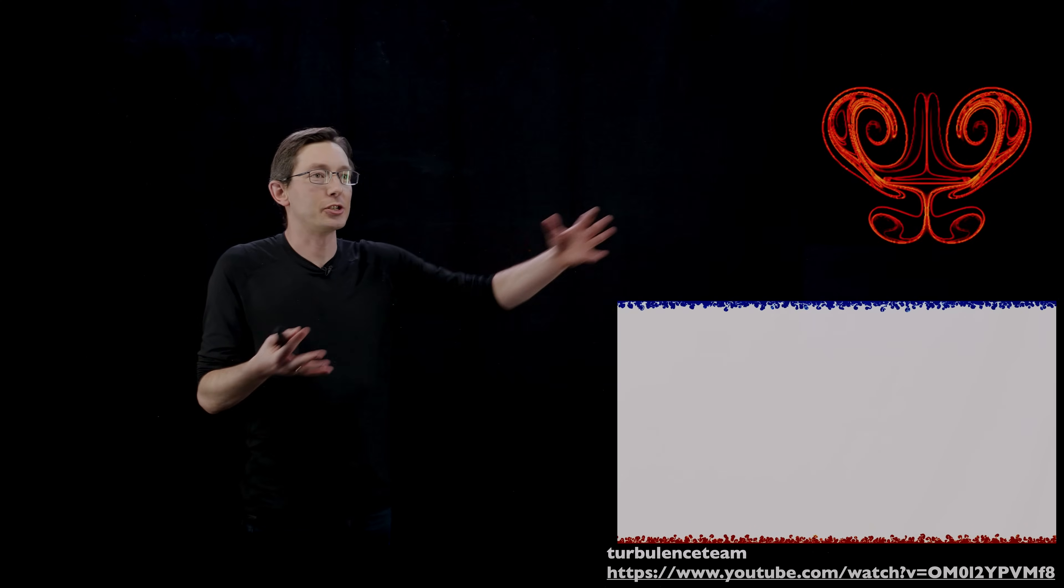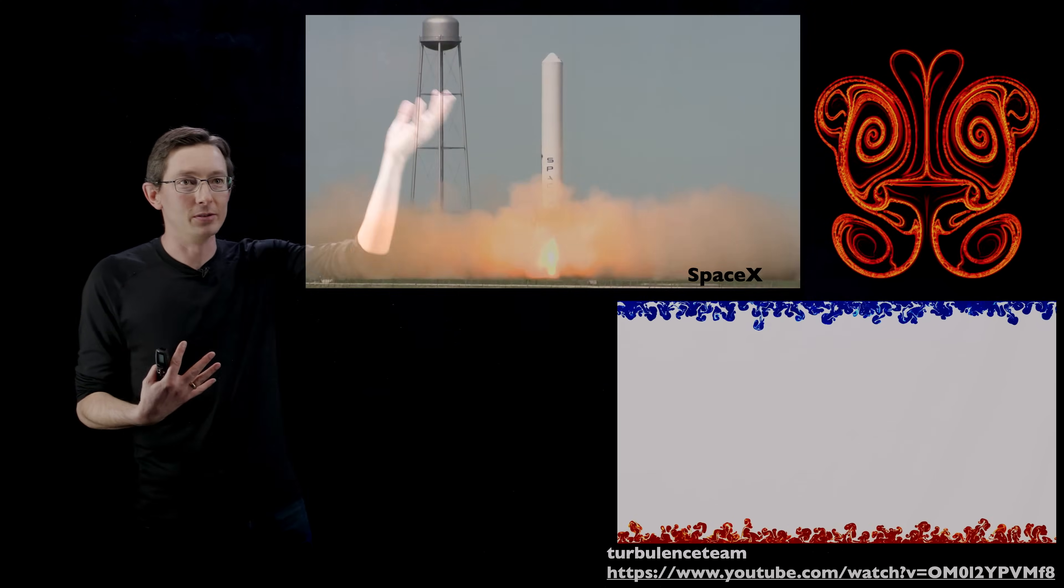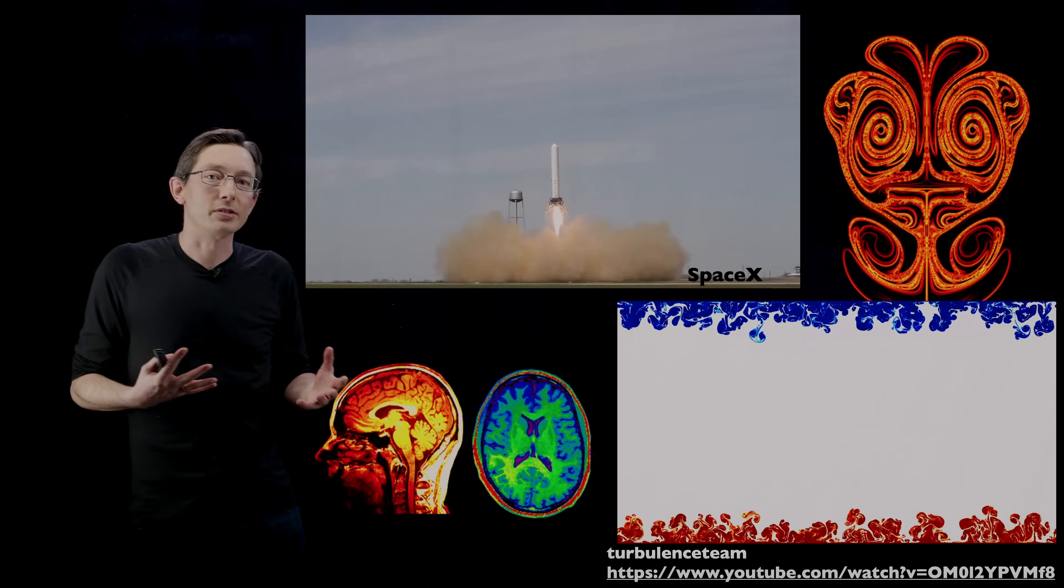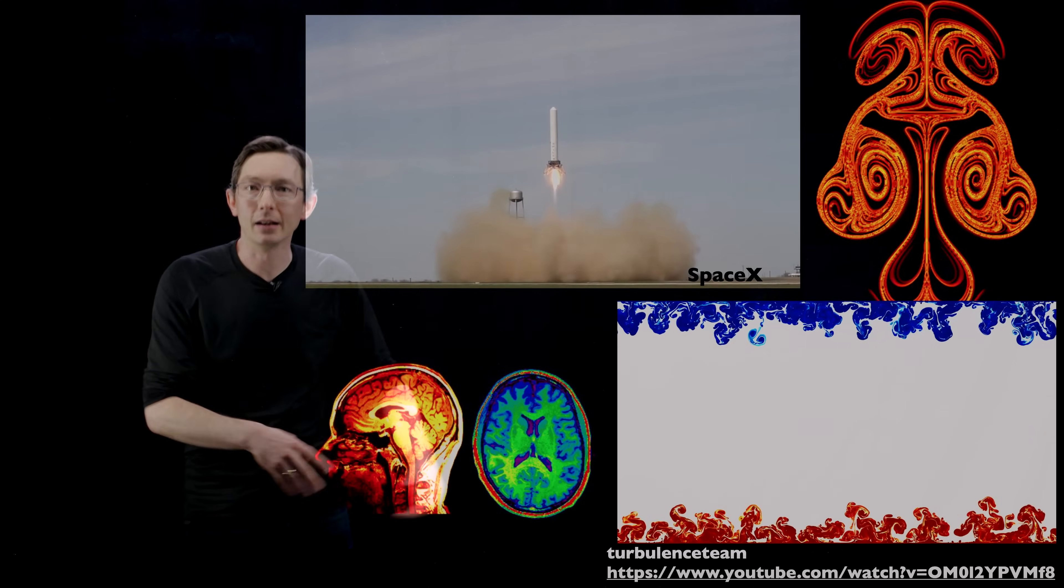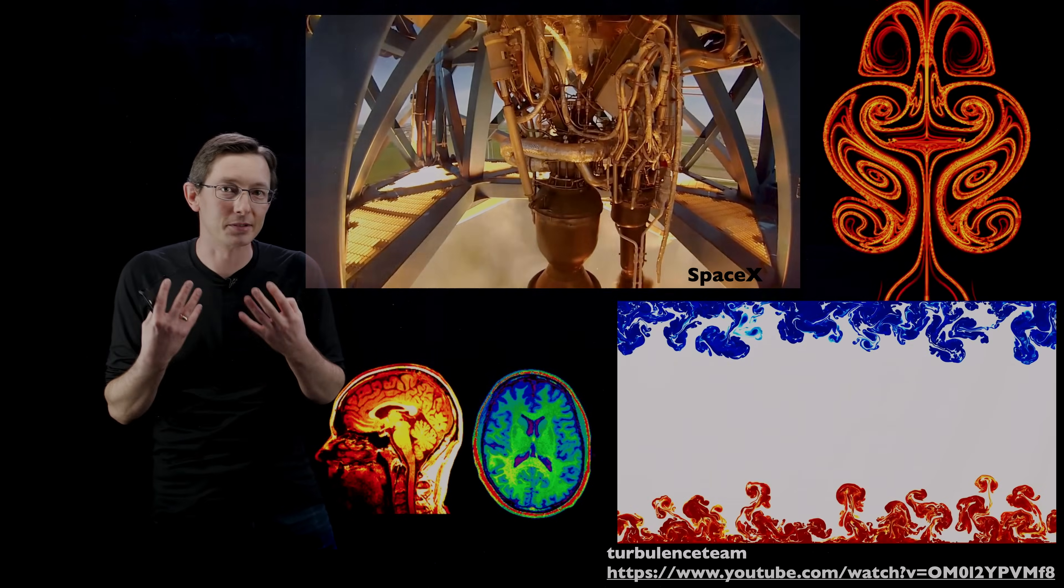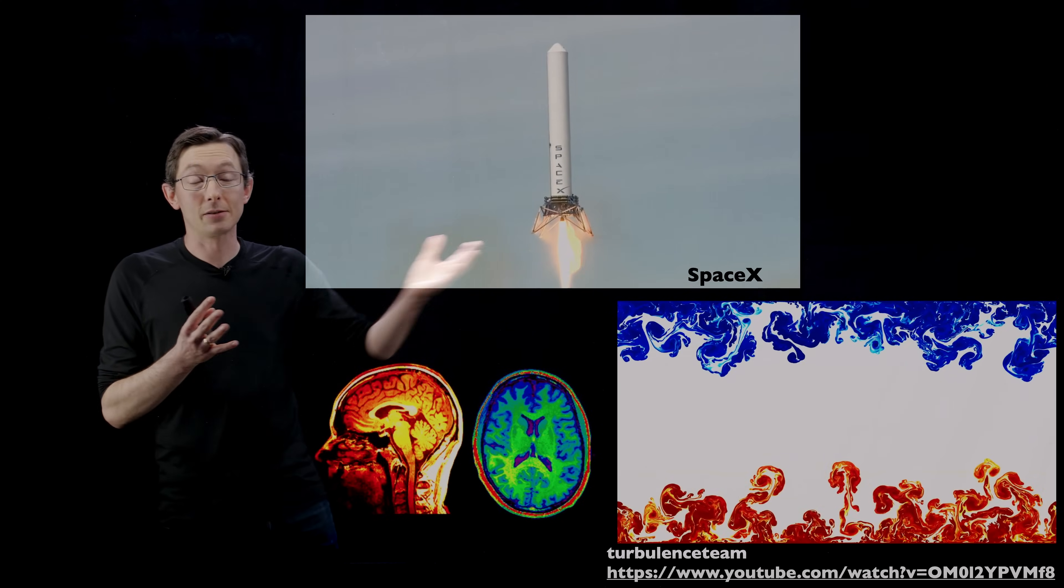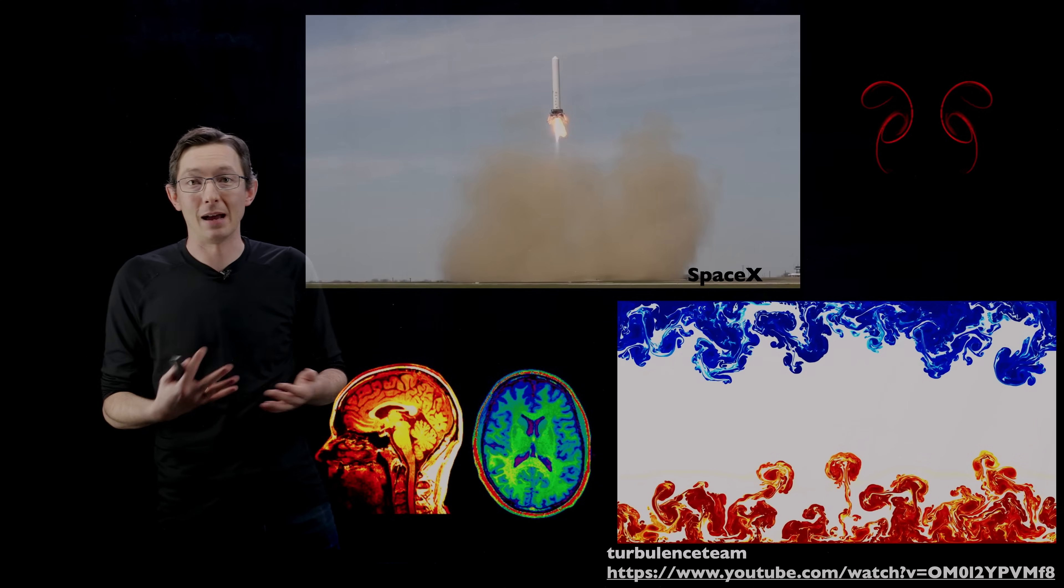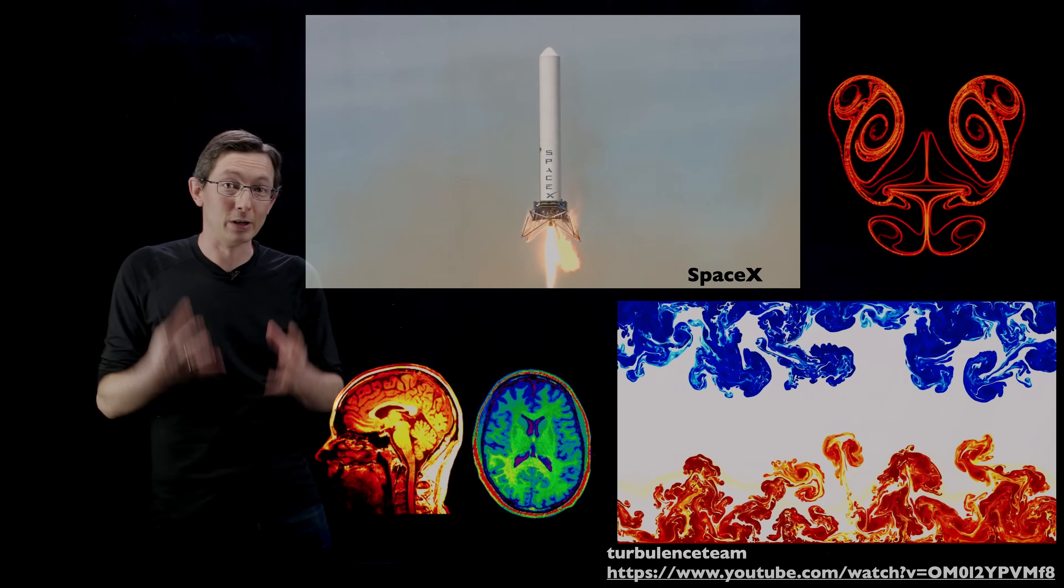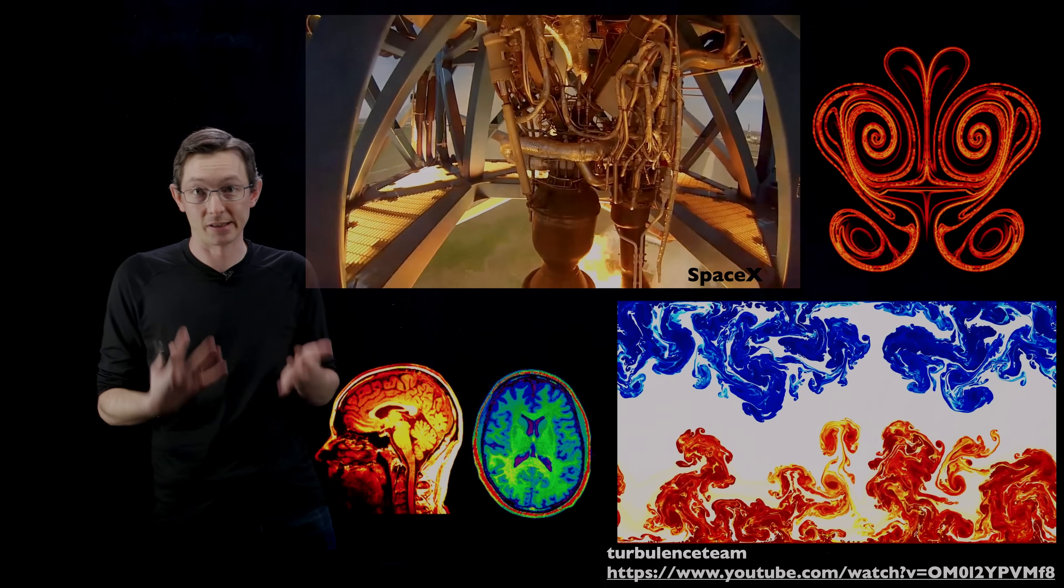They describe the rich behavior of mixing fluids. They're how we build models that we would use to design rockets and land them. We use dynamical systems to understand the brain, disease networks, social networks, you name it. Dynamical systems describe the evolving world around us.